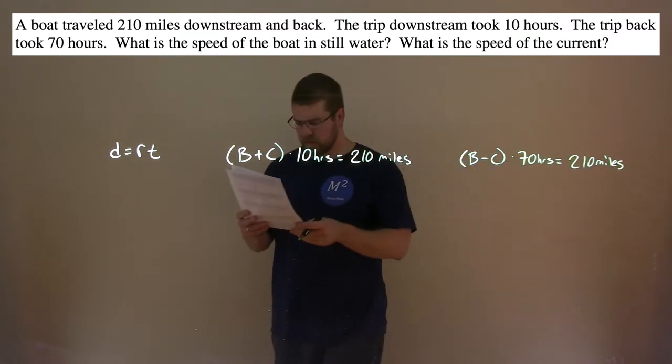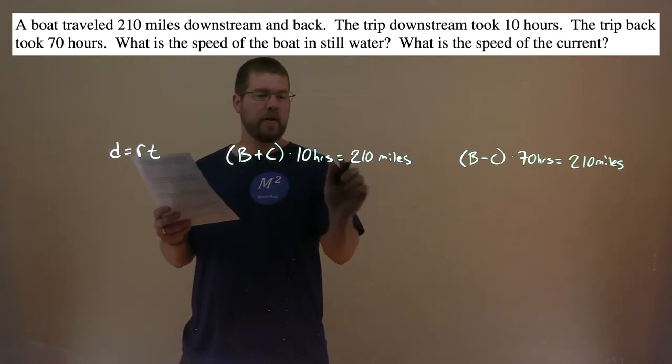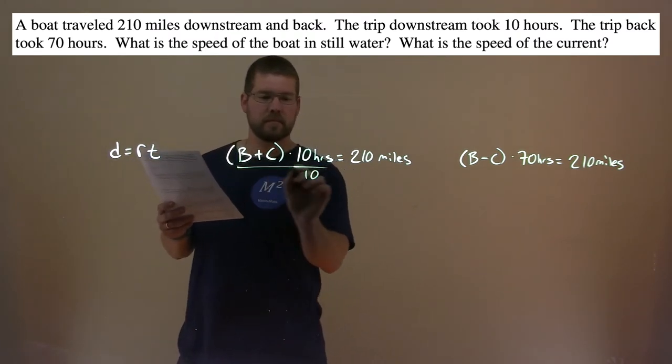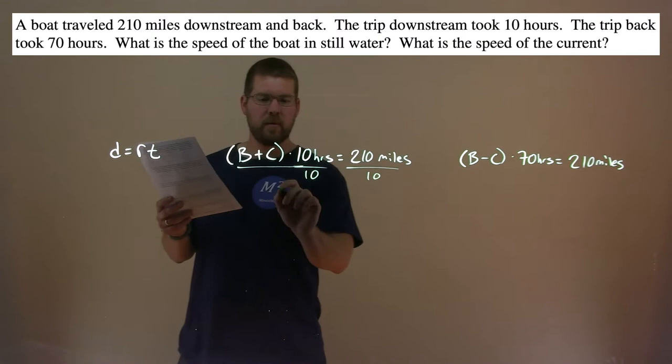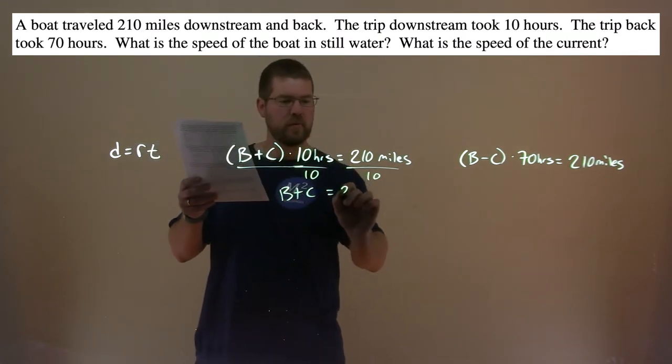Alright? So, now, let's simplify these equations here to make it a little easier. I'm going to divide 10 to both sides here. And we have B plus C equals 210 divided by 10, which is 21.